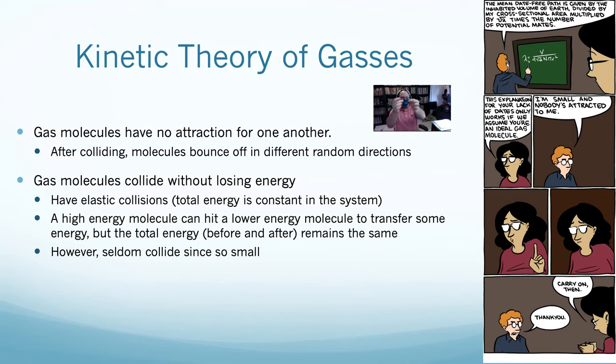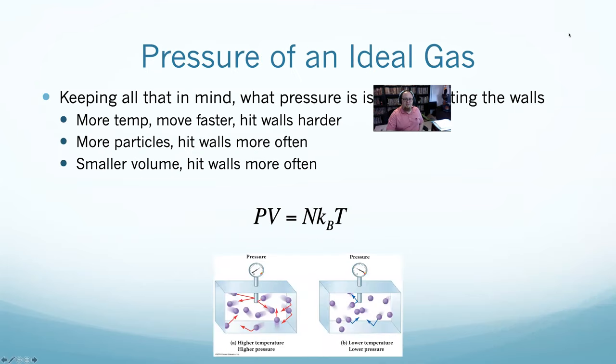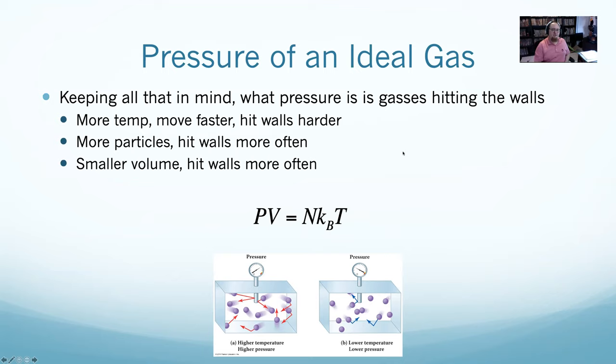Keep in mind, for an ideal gas, gas molecules have no attraction for one another. There's no extra force pulling them towards each other. When they collide, they won't lose energy, it will be totally elastic. However, a gas has very small molecules in a big area. For the most part, gas molecules are so small it is rare for them to collide. Gas molecules have no attractive force between each other and are so small they never run into each other. They'll bounce off the wall, giving everything its pressure.